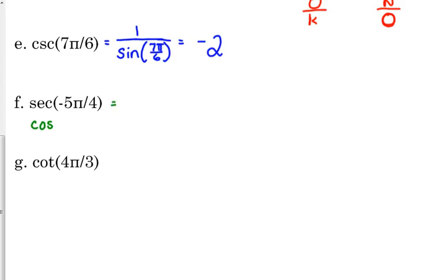But we want the secant, so we've got to flip it over. So that's negative 2 over the square root of 2. We don't leave radicals in the denominator, so we need to rationalize. So we get negative 2 square root of 2 over 2, and we need to cancel out those 2's. So the secant of negative 5π over 4 is equivalent to negative square root of 2.